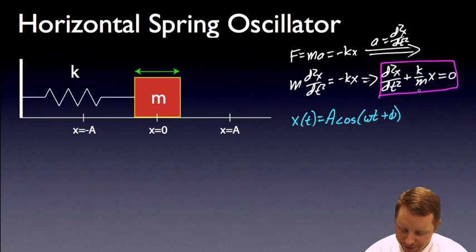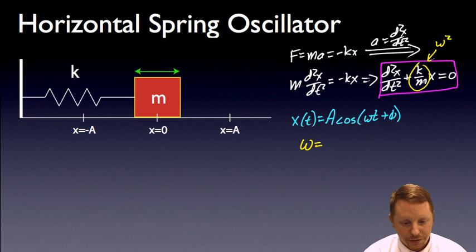And when we look at this, this form, this k over m, based on our generic form, is equal to omega squared. So if that's omega squared, it's pretty easy to see then that omega, our angular frequency, must be equal to the square root of that, or the square root of k over m.